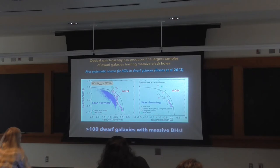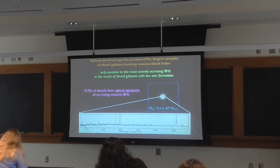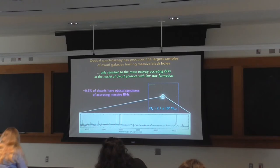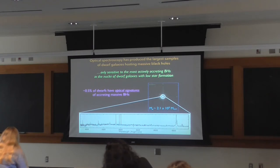This optical search for AGN in dwarfs was quite fruitful, but optically selected AGN are likely just the tip of the iceberg. The selection technique is only sensitive to the most actively accreting black holes, and the black holes need to be in the nuclei of the dwarf galaxies since that's where SDSS takes a spectrum. They also need to have relatively low star formation, because too much star formation can swamp the accretion signatures. So we might be missing many AGN that aren't accreting much, live off-center, or are overwhelmed by star formation.